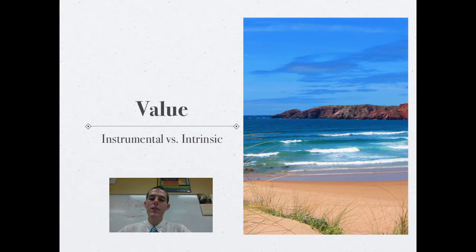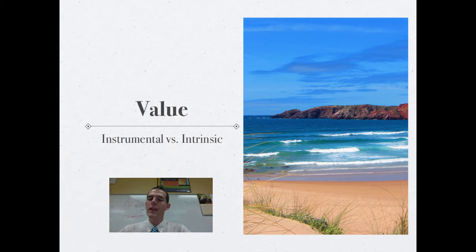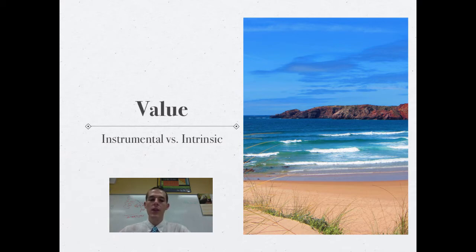First thing I want to talk about is just this idea of value. Essentially, value is basically deciding how important something is or is not. When we talk about environmental science, there's basically two different kinds of value that are assigned to things that we get from the environment: there's instrumental value and there's intrinsic value.